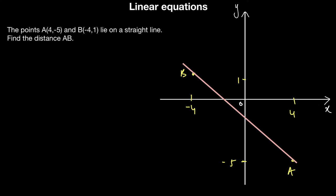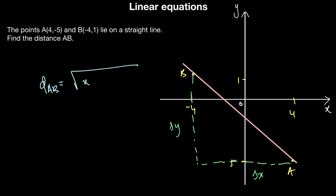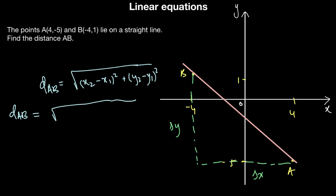We know that (change in X)² plus (change in Y)² equals the distance squared. So the distance between A and B equals the square root of (x2 minus x1)² plus (y2 minus y1)². Taking A as x1, y1 and B as x2, y2: x2 is minus 4 and x1 is 4, so we have minus 4 minus 4, the whole thing squared.